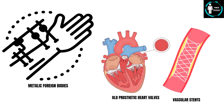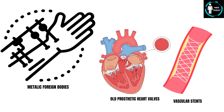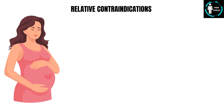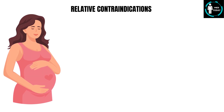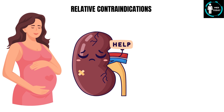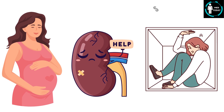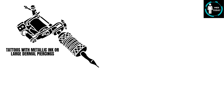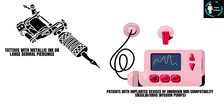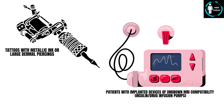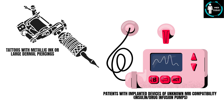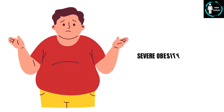Also absolute contraindications include some old prosthetic heart valves or vascular stents not rated as MRI safe. Relative contraindications include pregnancy, especially in the first trimester; renal impairment; claustrophobia; tattoos with metallic ink or large dermal piercings; patients with implanted devices of unknown MRI compatibility such as insulin pumps and drug infusion pumps; and severe obesity.